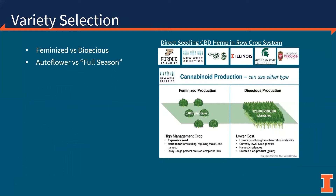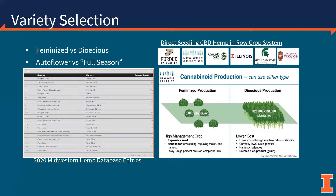Important terms to understanding cannabis include the difference between dioecious and feminized varieties. Dioecious populations contain both male and female plants, while feminized varieties contain a vast majority, if not all, female plants only. Dioecious production systems produce co-products such as grain and fiber in addition to cannabinoids, and are planted at a much higher population than in a feminized system. These production systems are still new and require further study. Looking at the 2020 results from the Midwestern Hemp Database, we have a list of some of the most commonly used varieties across the four states involved in the program — all available on the website.